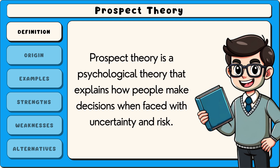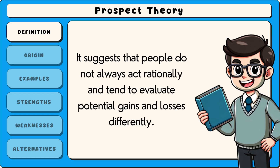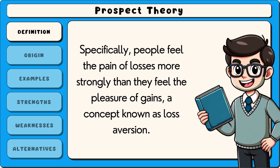Prospect theory is a psychological theory that explains how people make decisions when faced with uncertainty and risk. It suggests that people do not always act rationally and tend to evaluate potential gains and losses differently. Specifically, people feel the pain of losses more strongly than they feel the pleasure of gains, a concept known as loss aversion.